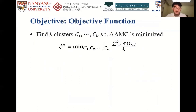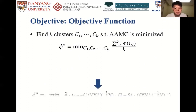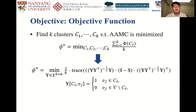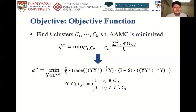Therefore, we formulate our objective function for the K-AGC problem based on AAMC. Namely, we aim to find K disjoint clusters that minimize the AAMC. After doing some math, the problem is transformed into a mathematical form which aims to find a K×N indicator matrix Y minimizing the trace of the matrix products as shown in the formula. For each node V_j, there is only one entry among K dimensions equal to one, and all other entries are zero.